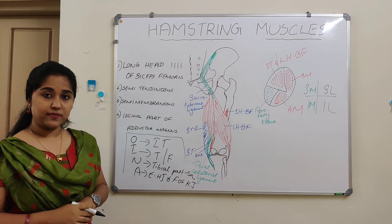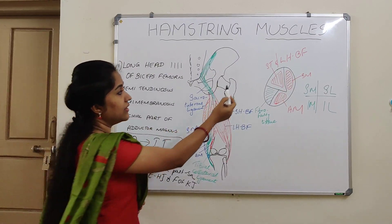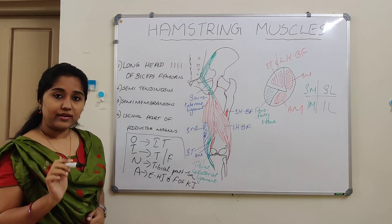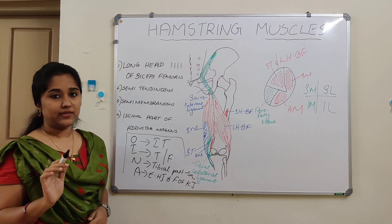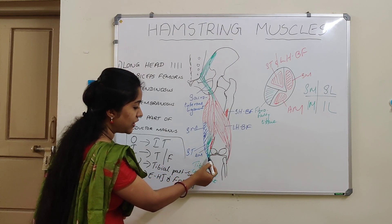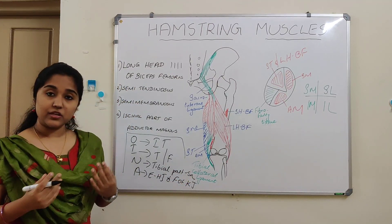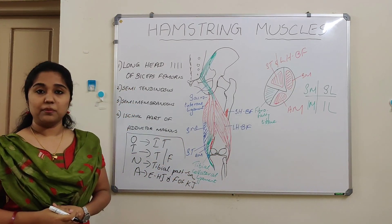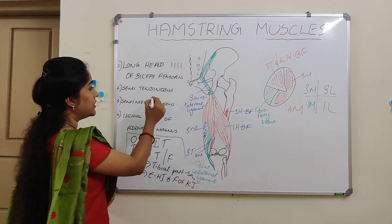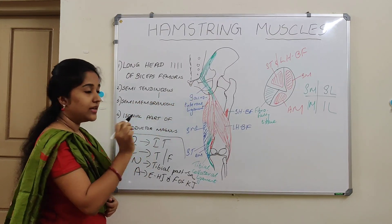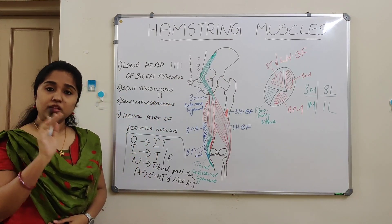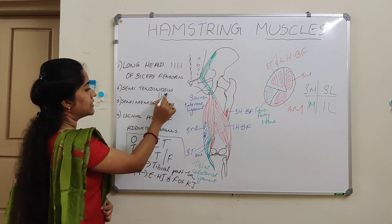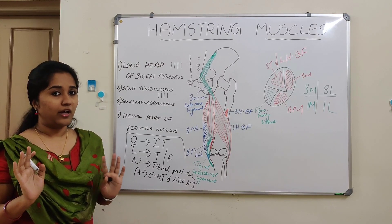What about semitendinosus? The semitendinosus also takes origin from the superomedial aspect of the quadrilateral area of the ischial tuberosity, along with the long head of biceps femoris. It gets inserted into the medial surface of the shaft of tibia. The name semitendinosus refers to its long tendon. It is supplied by the tibial part of the sciatic nerve and acts as an extensor of the hip joint and flexor of the knee joint. All four criteria are fulfilled.